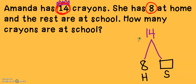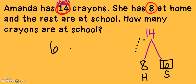Counting down: 14, 13, 12, 11, 10, 9, 8. Let's see how many: 1, 2, 3, 4, 5, 6. So Amanda has 6 crayons at school.